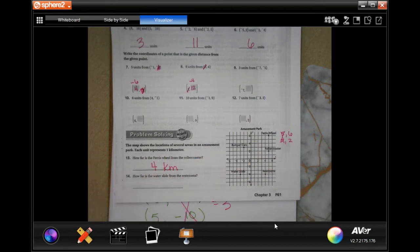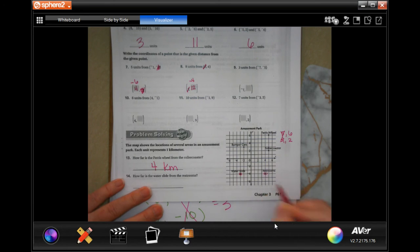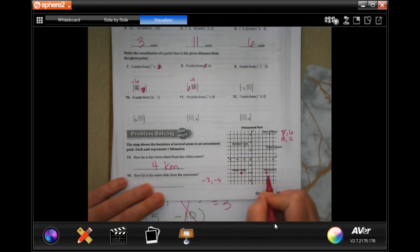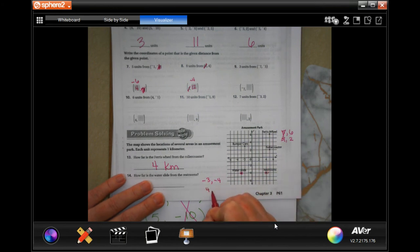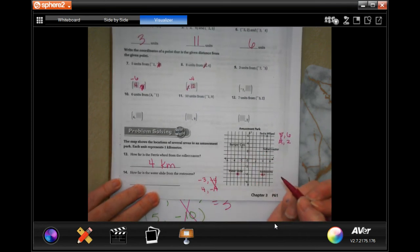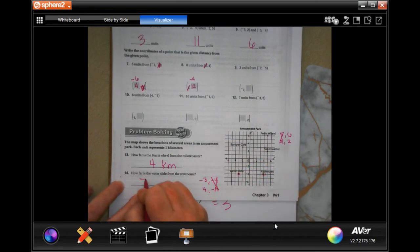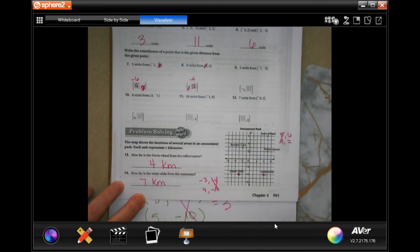Now how far is the water slide from the restroom? Water slide is at negative three comma negative four, and the restrooms are four, negative four. Those ones are identical. Three and four have a negative and a positive, so I'm going to add them. Seven kilometers.